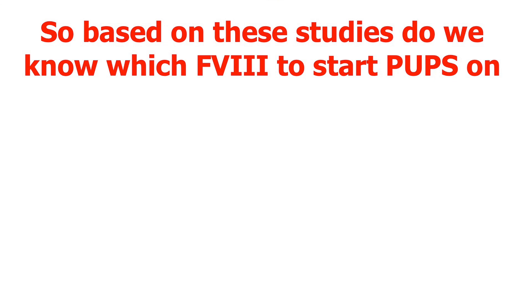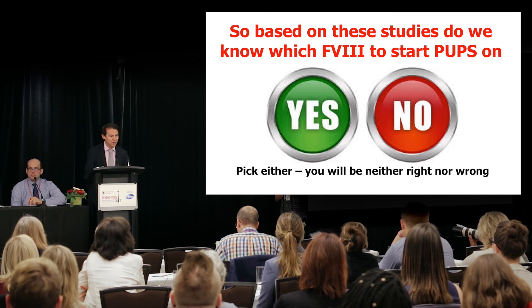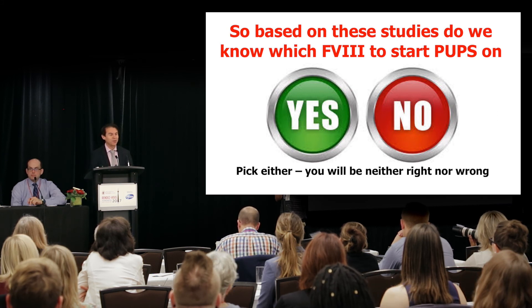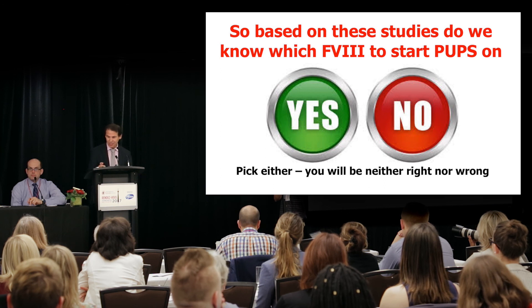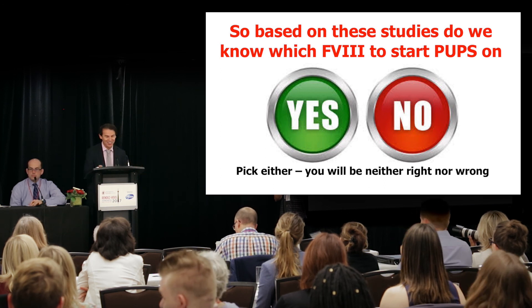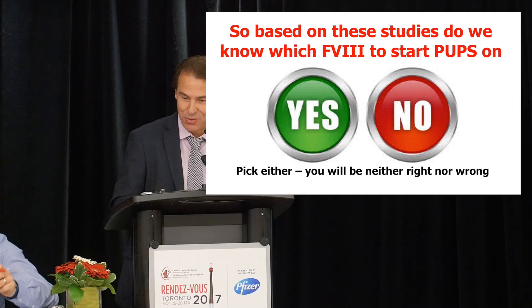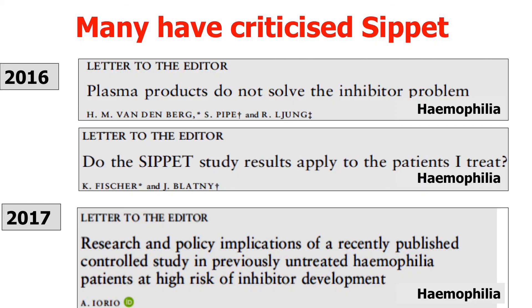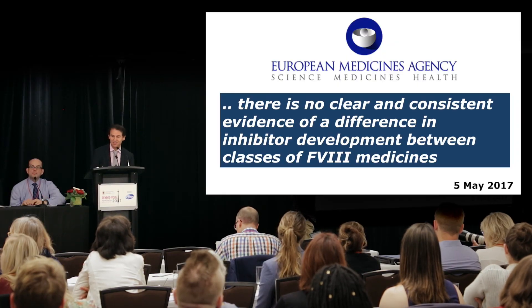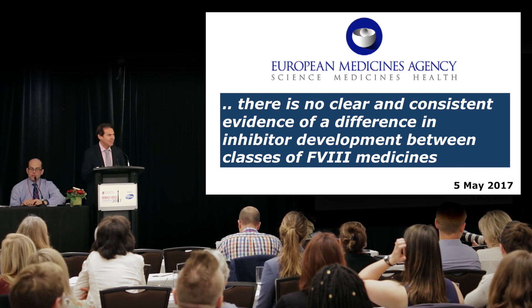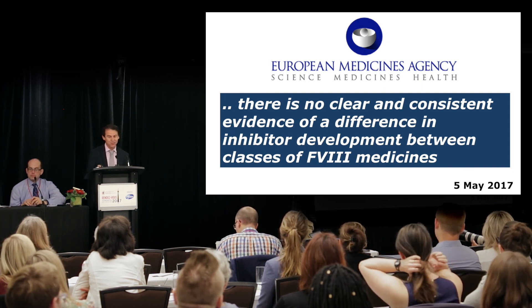So based on these studies, do we know which factor VIII to start previously untreated patients on? Many would say yes, start them on plasma-derived. But in fact, we still probably don't know. This was published in the New England Journal of Medicine last year — the SIPPET study: A Randomized Trial of Factor VIII and Neutralizing Antibodies in Hemophilia A. Previously untreated patients were randomized to either recombinant or plasma-derived factor VIII. The incidence of inhibitor development was 44.5% versus 26.8%. So recombinant gave more inhibitors. However, the European Medicines Agency — the equivalent of Health Canada or the FDA in Europe — stated there is no clear and consistent evidence of a difference in inhibitor development between classes of factor VIII molecules. So after all of this work, we still don't know.